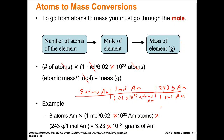Doing the dimensional analysis this way will be more helpful as you continue through chemistry. If drawing the 'train tracks' is confusing, I'd recommend getting used to it. But if you'd rather use multiplication signs, that's perfectly fine too. That's how we convert from atoms to mass.